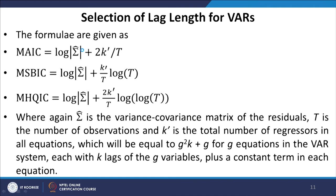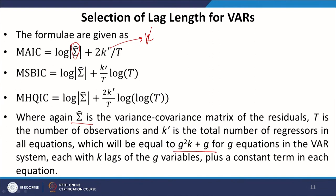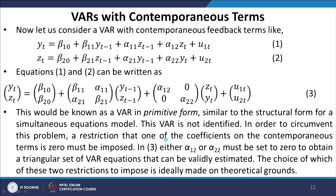The formulas are very similar to before — in place of the estimated error variance, we use Σ̂, and we have k′ as the total number of regressors in all equations, equal to g²k + g for a VAR system with g equations, each with k lags of the g variables plus a constant term in each equation. The criteria trade off a fall in the RSS as more lags are added against an increase in the penalty term.